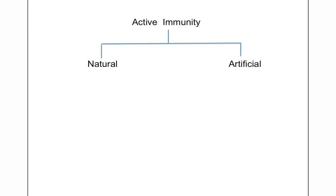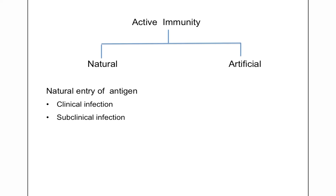Active immunity can be of two types: naturally acquired active immunity or artificially acquired active immunity. Naturally acquired active immunity is the immunity developed because of the natural entry of the antigen into the body — when pathogenic microorganisms or their products naturally come in contact with the body. This can be due to a clinical infection whose symptoms are visible, or a subclinical infection where no clinical symptoms are visible.